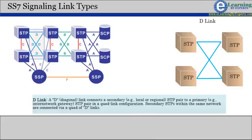D link, A D or diagonal link, connects a secondary, for example local or regional STP pair to a primary, for example internetwork gateway STP pair in a quad link configuration.